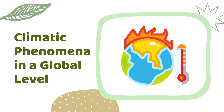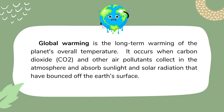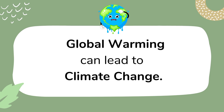We will now be informed of some climatic phenomena occurring at a global level at present. Global warming has become an alarming issue. Basically, global warming is the long-term warming of the planet's overall temperature. It occurs when carbon dioxide and other air pollutants collect in the atmosphere and absorb sunlight and solar radiation that has bounced off the Earth's surface. Global warming can lead to climate change, and it is caused by increased concentration of greenhouse gases, mainly from human activities such as burning fossil fuels and farming.